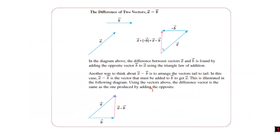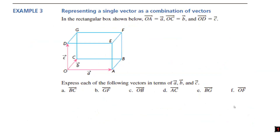No questions — great. Let's solve an example together to summarize what we learned. Please take your time, up to 10 minutes. In the rectangular box shown, OA equals vector a, the two edges are a and b, and the height is c. So length is a, width is b, height is c.